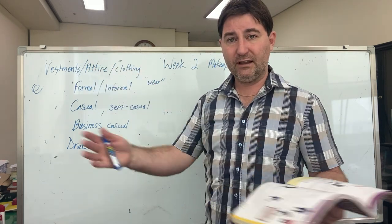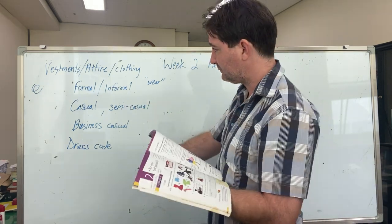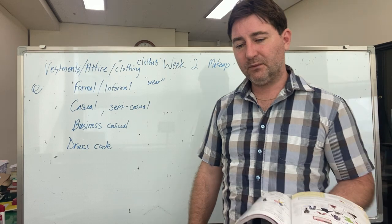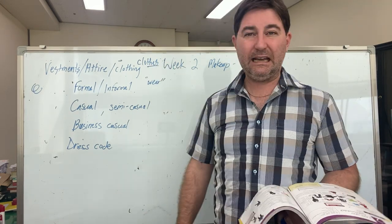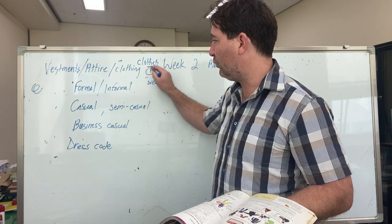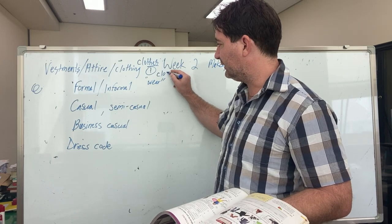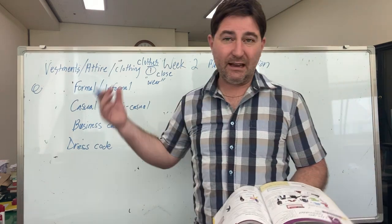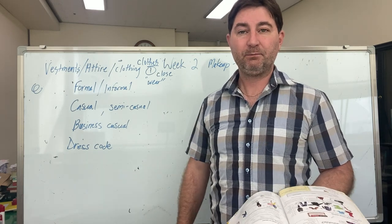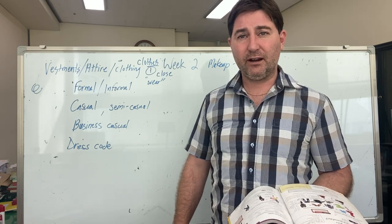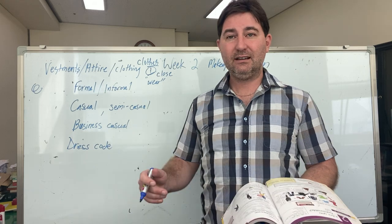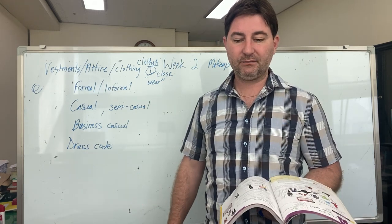We normally refer to anything we put on our body as 'clothing' or 'clothes.' Pronunciation-wise, I often get students trying to pronounce an extra syllable — 'clothes' is just one syllable. It actually sounds more like 'close,' like to close a door. We don't emphasize the 'th' at all; in fact, we try to ignore it because it's very difficult to say. Don't say 'clo-thes' — there's only one syllable.